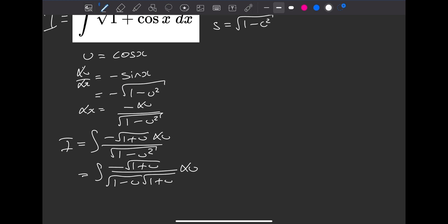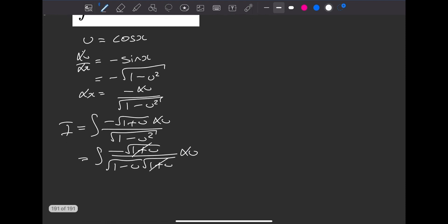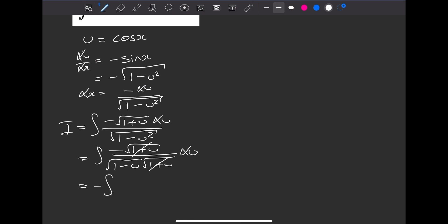And now we can see that our square root of 1 plus u will cancel top and bottom. So all we're left with is negative the integral of du over square root of 1 minus u. If we rewrite this in index form instead of the square root, we'll have the negative of the integral of 1 minus u to the power of negative 1/2 du.